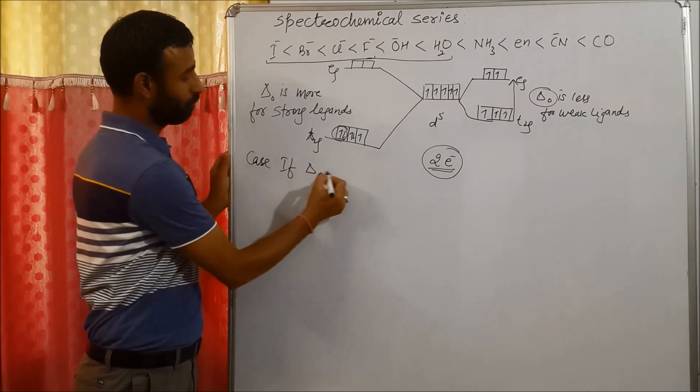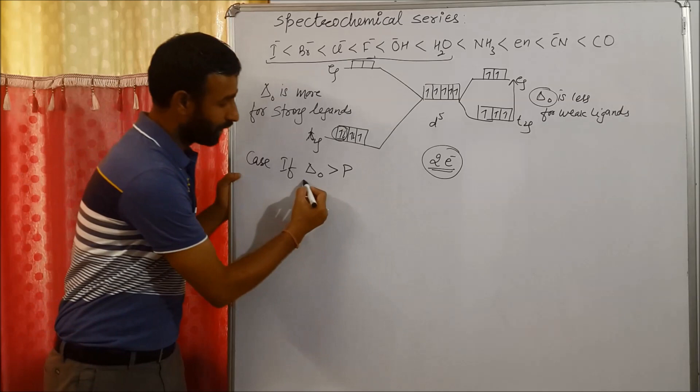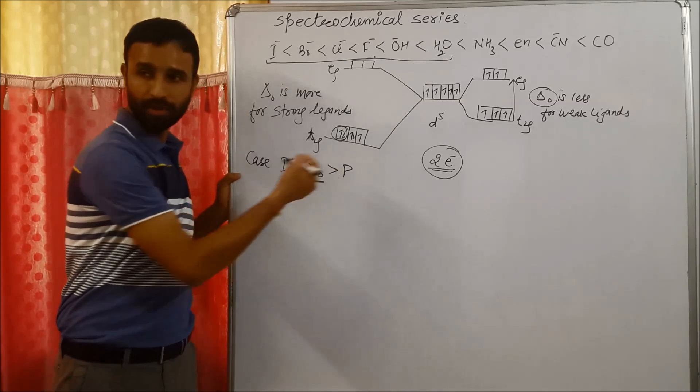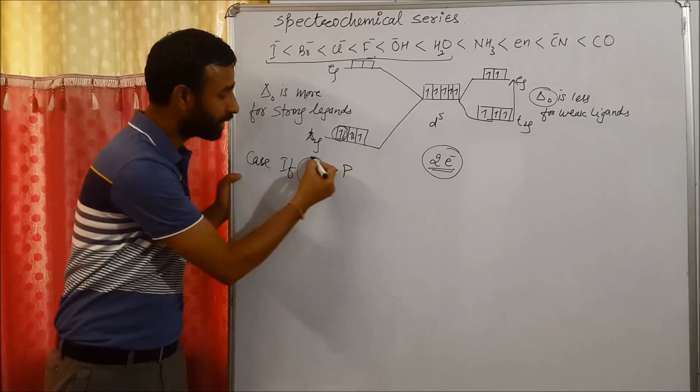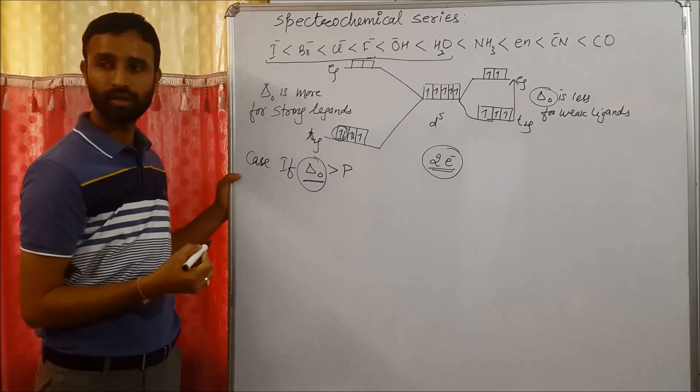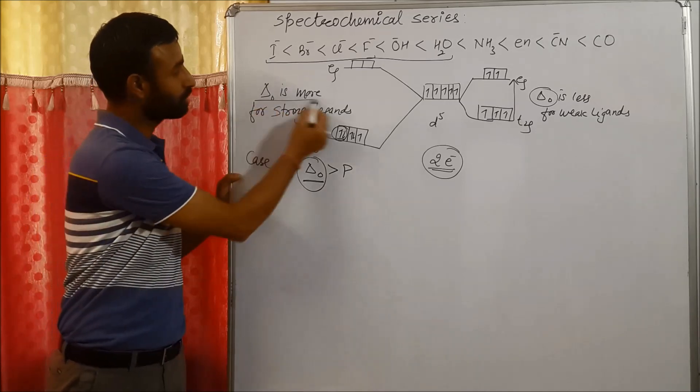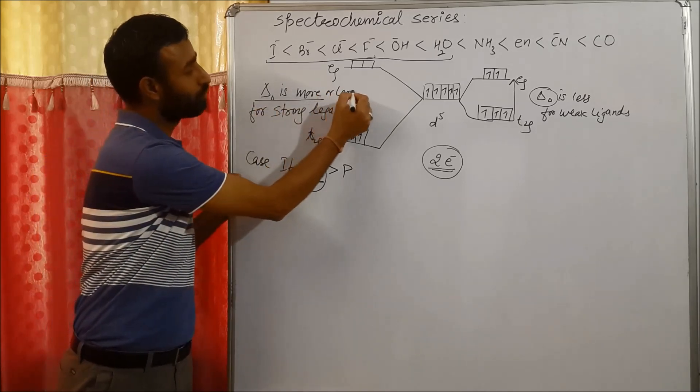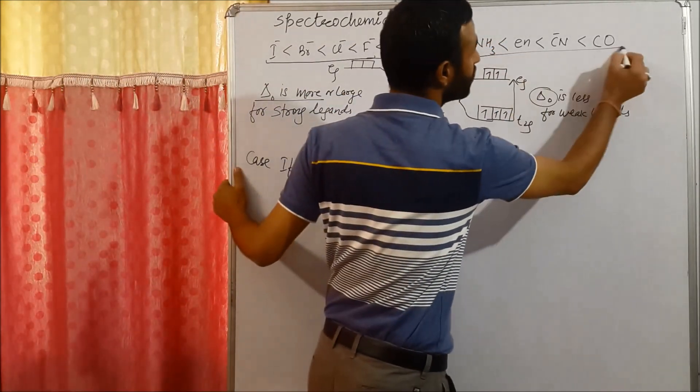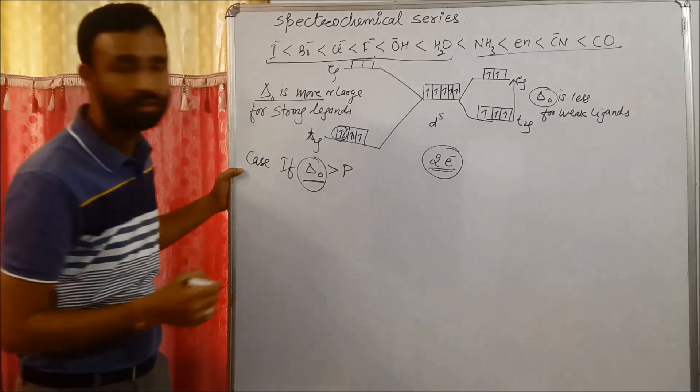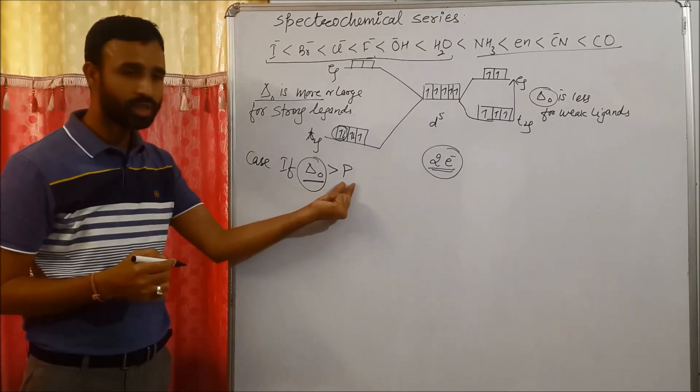If delta O is greater than P, so delta O is greater than P means delta O should be large. And delta O is large for strong ligands. Delta O is more, or large, for strong ligands. And strong ligands are on the right side: CO, cyanide, EN. So in that case, if delta O is greater than P,